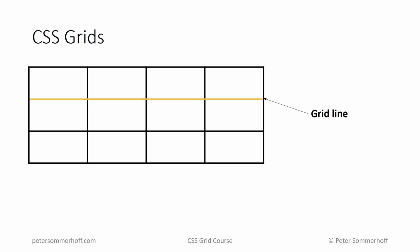So first of all, there are grid lines. A grid line can be either a horizontal line, like here, or it can be a vertical line, therefore separating all the columns in the grid. So the grid lines are basically all the lines that you would end up drawing if you were to draw your grid on a piece of paper.